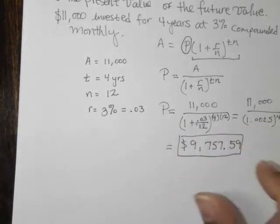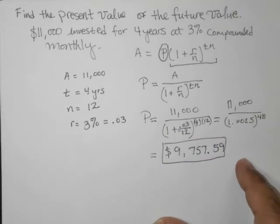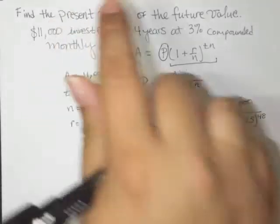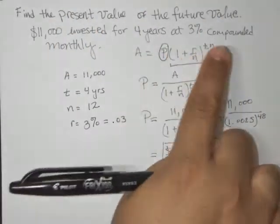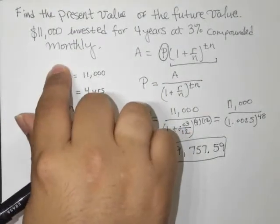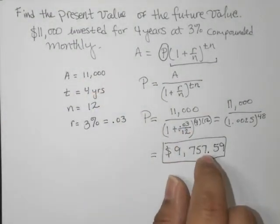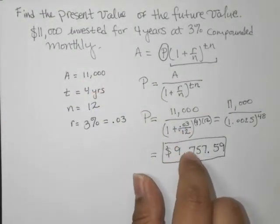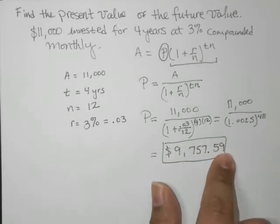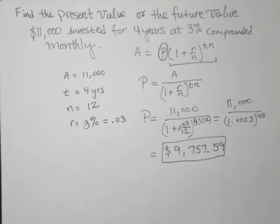So let's recap what we're talking about here. All right. If I want to have $11,000 in my account in four years at 3% compounded monthly, then today, I would need to invest $9,757.59. So that's exactly what this scenario was asking. So how much do we need to invest today so that four years from now, we can have $11,000 in our account?